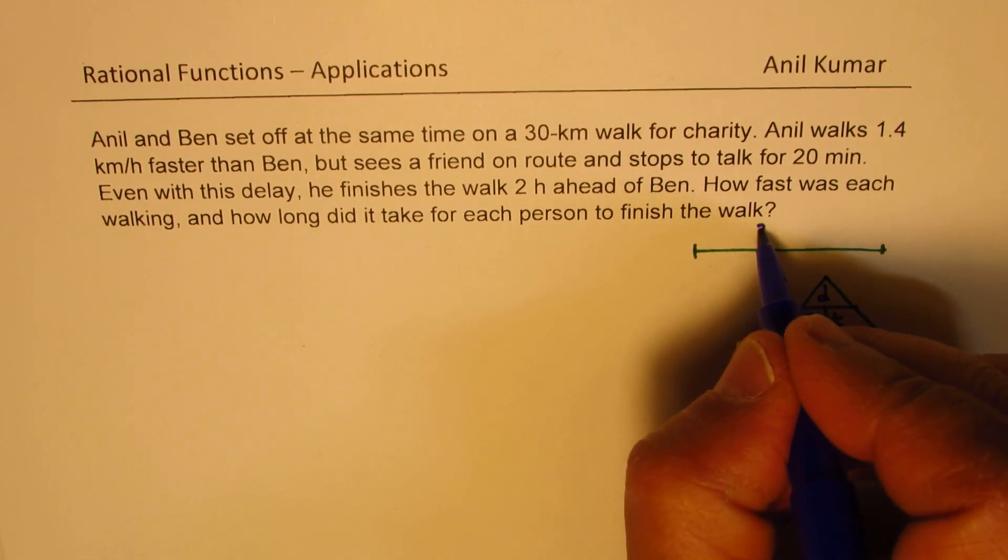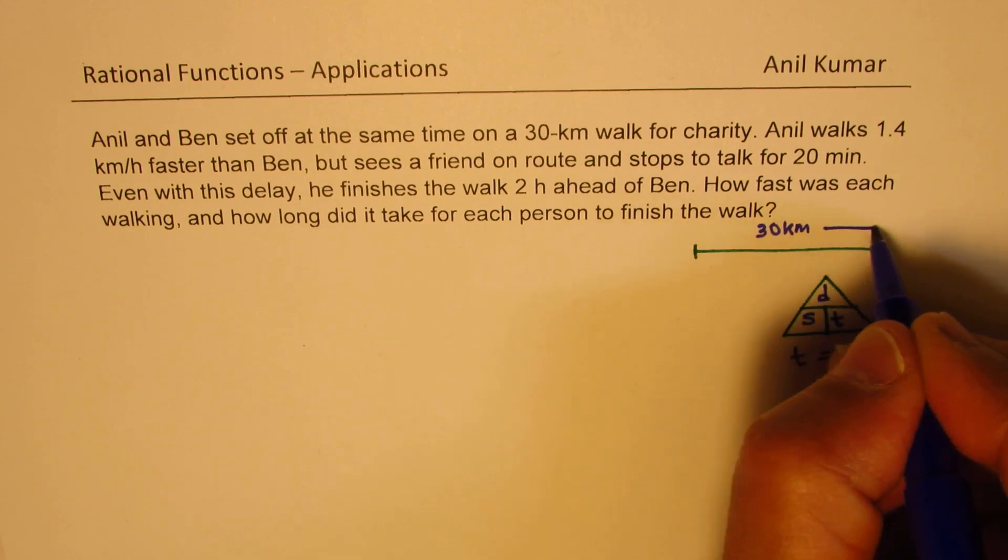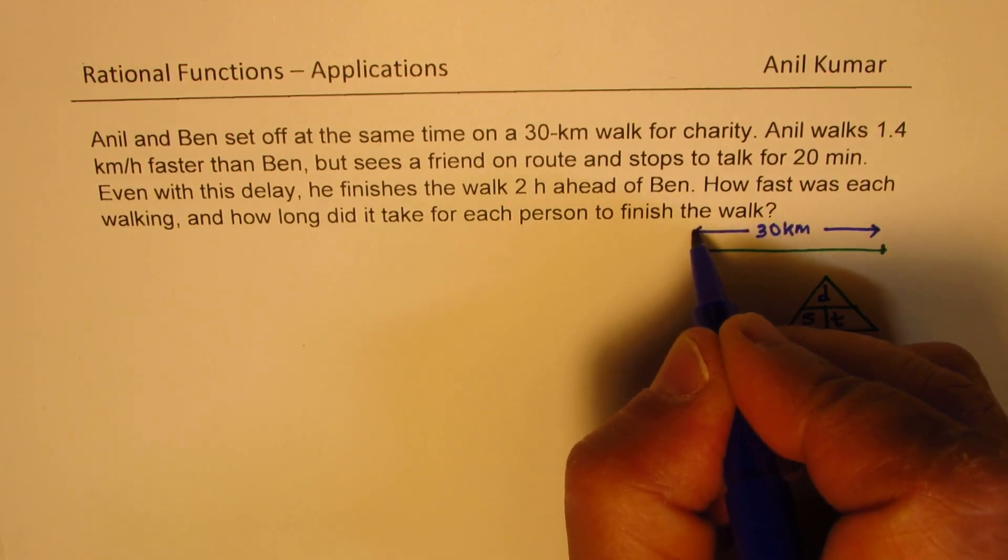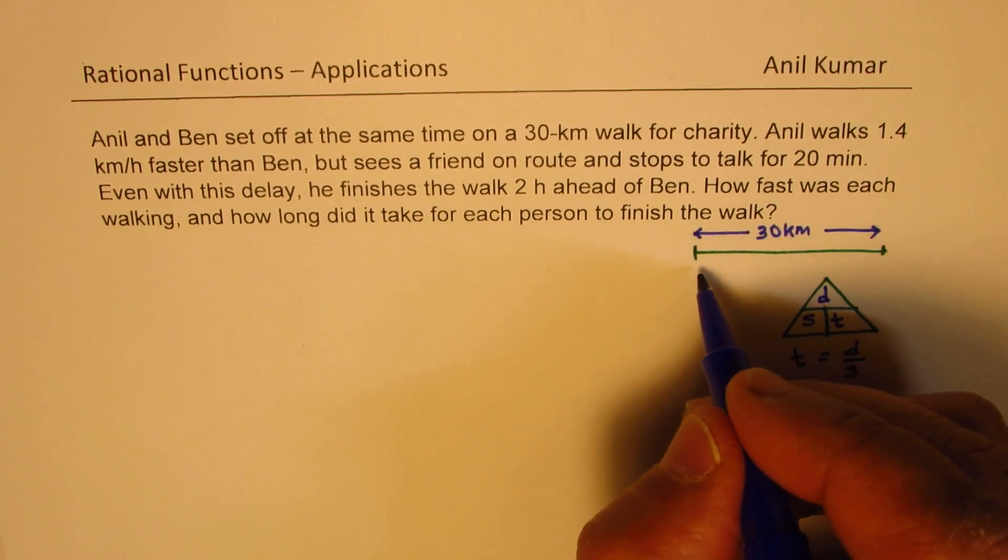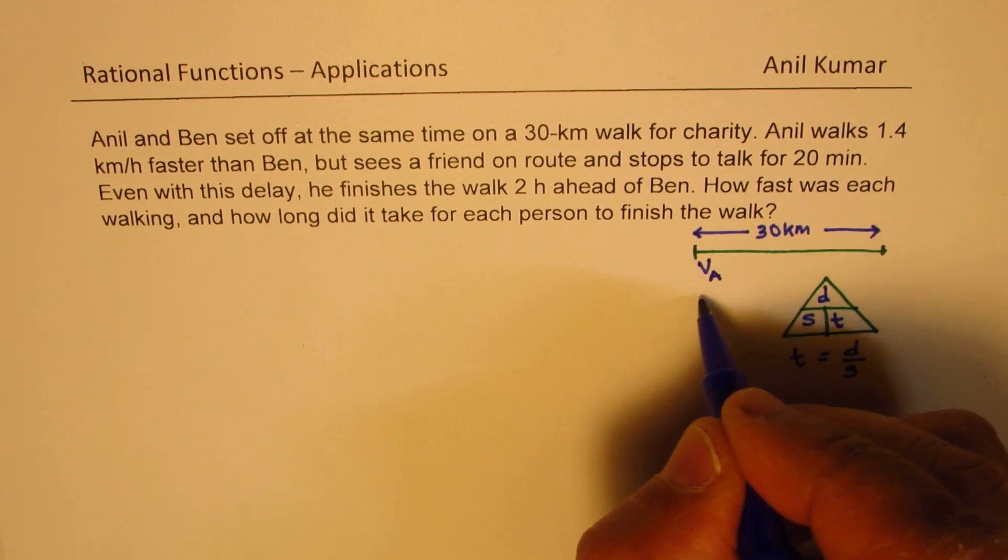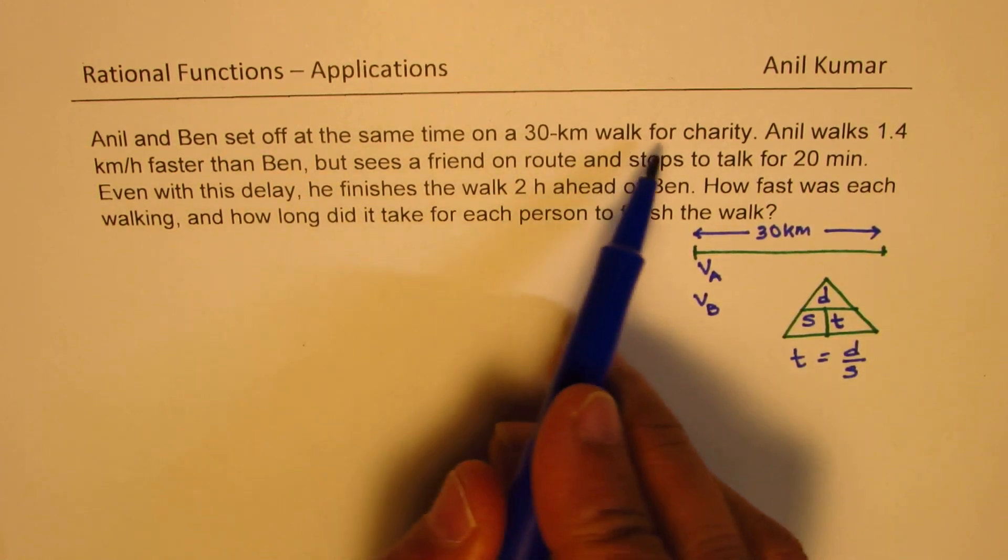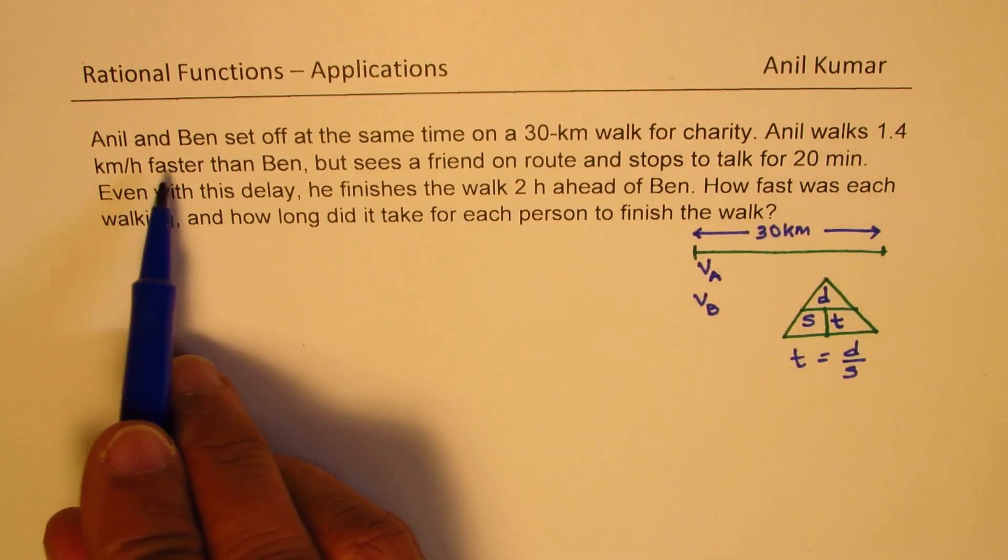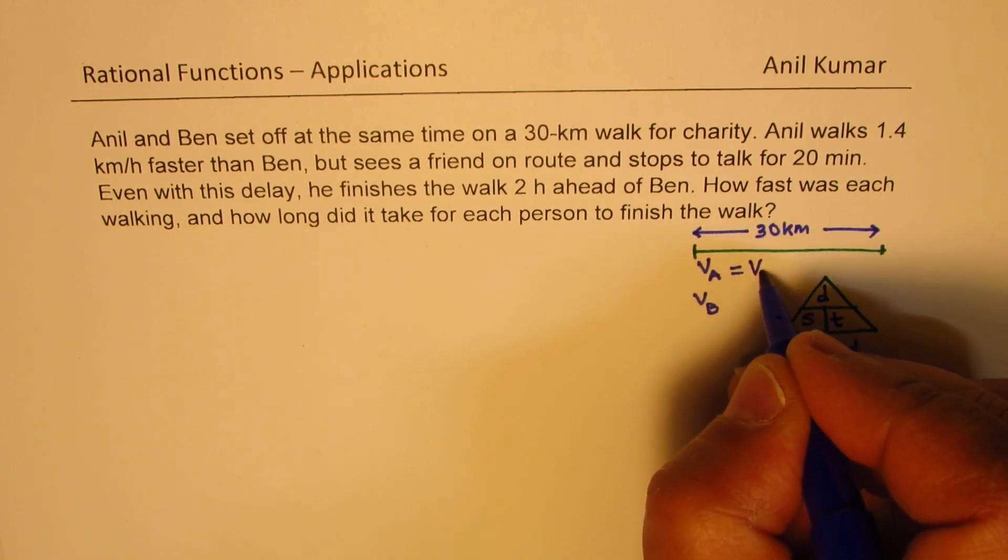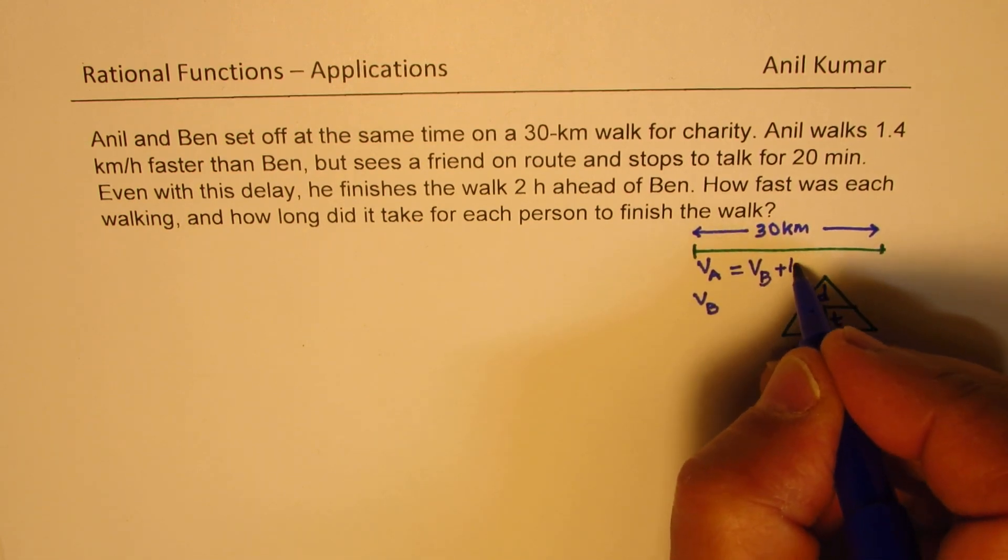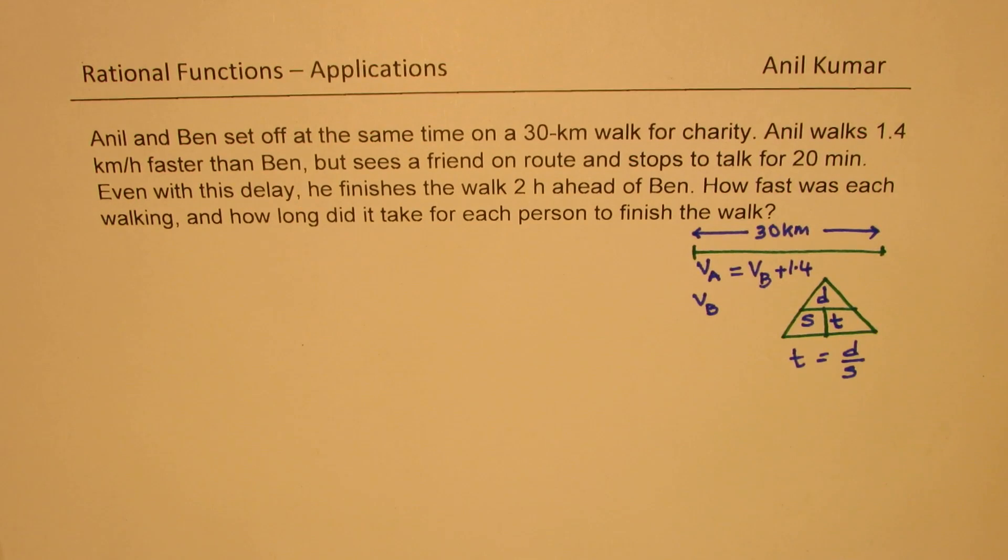The total walk here is 30 kilometers. Our units will be for time, hours. So the two persons, Anil and Ben, let us say we say VA is the velocity for Anil and VB is for Ben. When you say Anil and Ben set off for this walk, Anil walks 1.5 kilometers per hour faster than Ben. So we can actually relate these two. We know velocity of Anil is, speed of Anil is faster. And it's 1.4 more. So we could relate them like this.